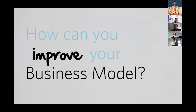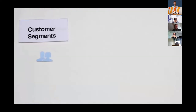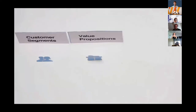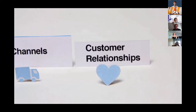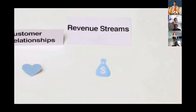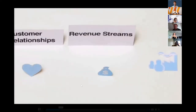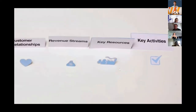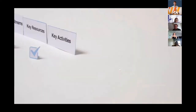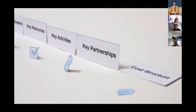There are nine building blocks of the Business Model Canvas: your customers, your value proposition — the value you deliver to each customer — customer relationships, the revenue streams you generate, the key resources and the key activities you're required to create value, the key partners, and the cost structure of the business model.